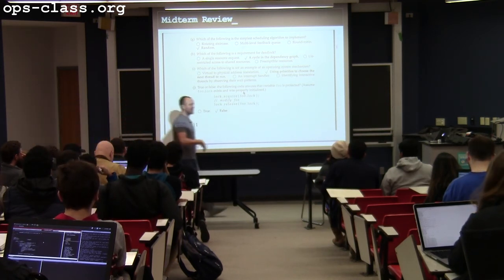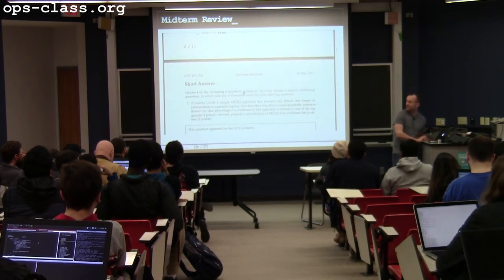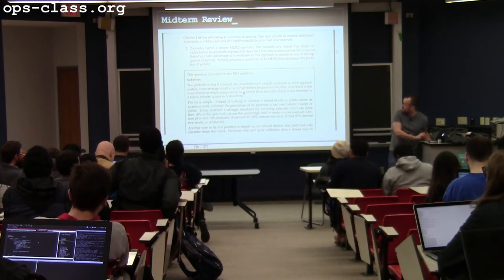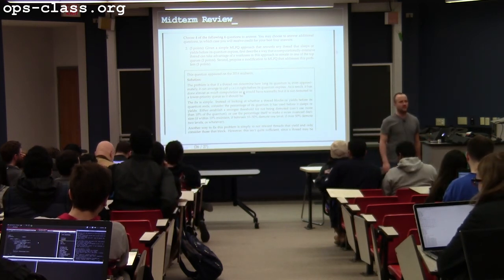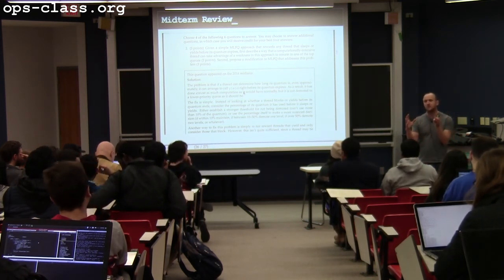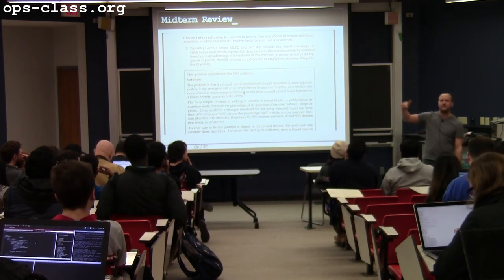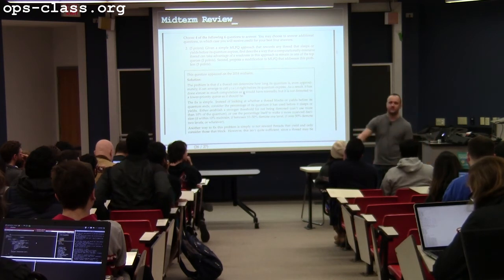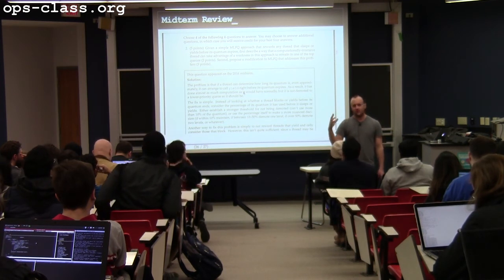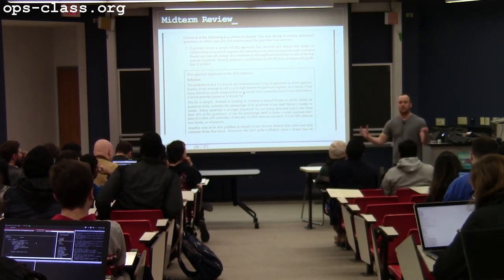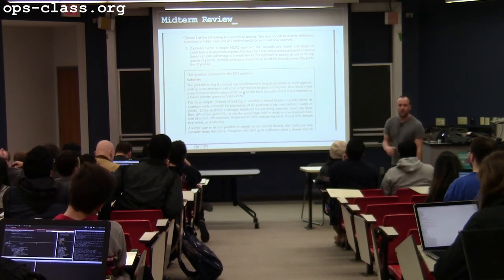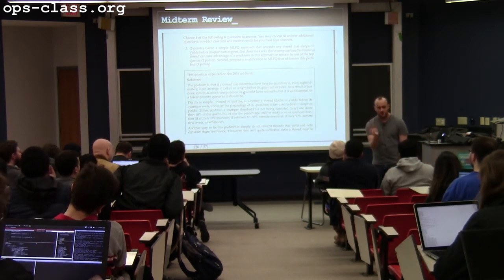Any other questions so I can get defensive and defend my solutions? For the MLFQ question — if a thread figures out how to yield right before its quantum ends, it can keep itself in the top queue despite doing very computationally intensive work. Maybe it yields or does a really short sleep, or does a tiny bogus read to a file to look like an interactive task. One solution is to give threads credit for how much of the quantum they actually use. The goal of MLFQ is to reward threads that do a little bit of work and then block again.